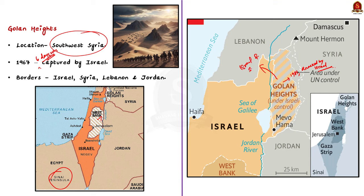Syria demands the return of Golan Heights because of the region's strategic and historical significance. On the other hand, Israel argues that Golan Heights is essential for its security interest because of topographical advantages — the high elevation provides a vantage point overlooking northern Israel. The international community including the UN does not recognize Israeli sovereignty over the Golan Heights and considers it an occupied territory. Note that Golan Heights is bordered by Syria in the east, Jordan in the south, Israel in the west and Lebanon in the north.